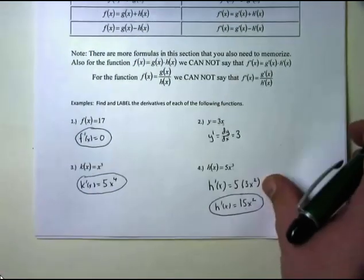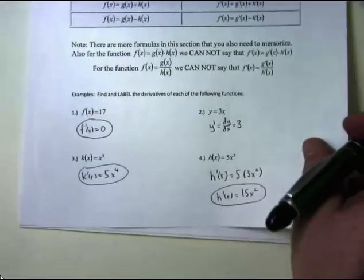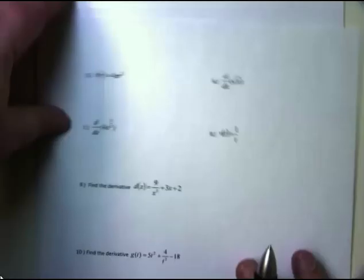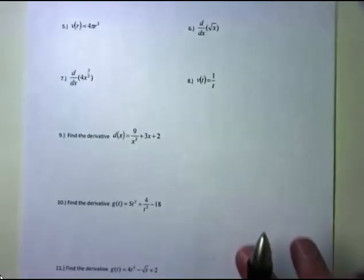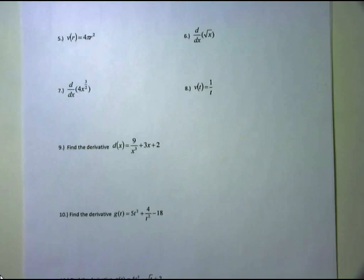Let's do some more of these. You can begin to see that taking a derivative, as long as you know the formulas, can be rather quick. We don't always have to use x as the variable, so here's one with a different variable. If v(r) equals 4πr squared, find the derivative.